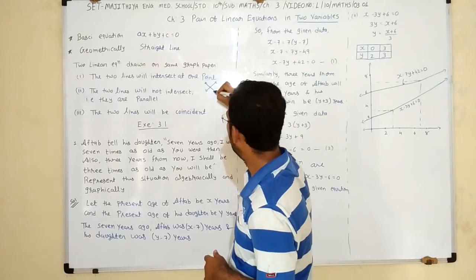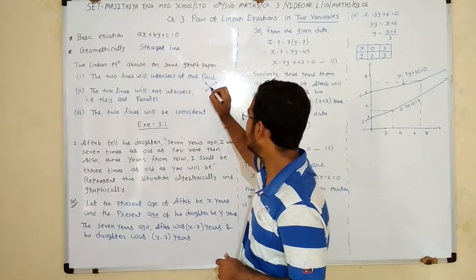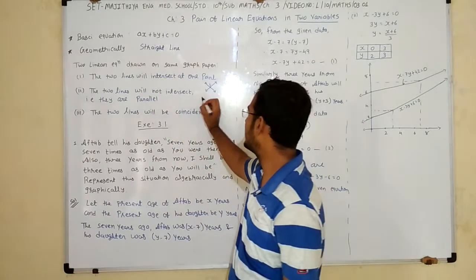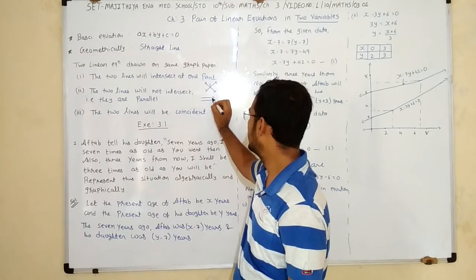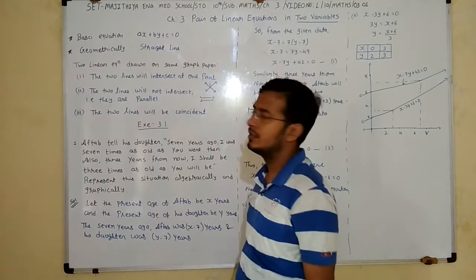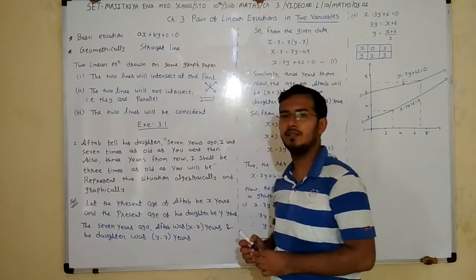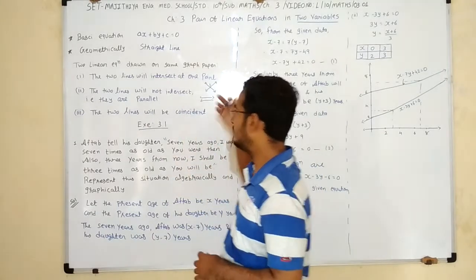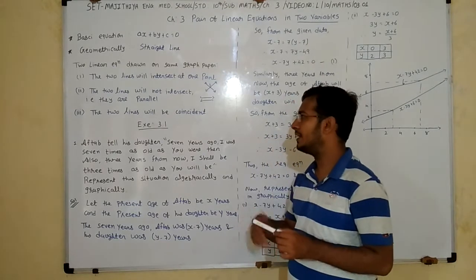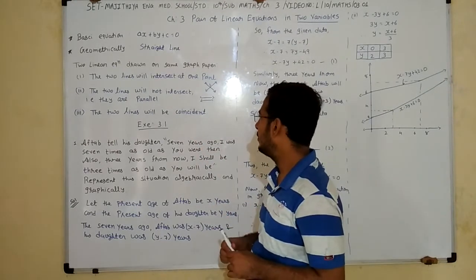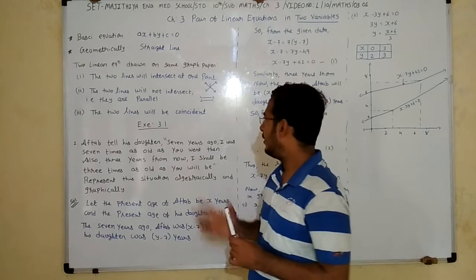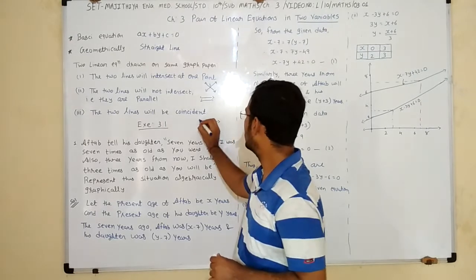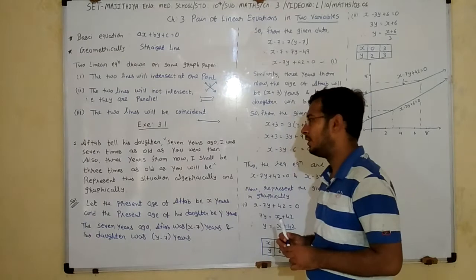There are 2 equations, 2 lines drawn — they intersect at one point. Second, the 2 lines will not intersect, meaning they are parallel lines. Third, the 2 lines will be coincident, meaning they overlap — they touch at infinitely many points, like two lines on the same position.